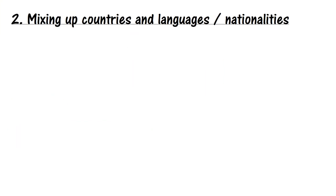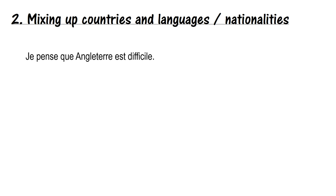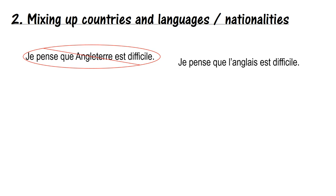Number two: another common error — mixing up countries and languages or nationalities. A lot of people do this in their English work as well. Here's a phrase I saw: 'Je pense que Angleterre est difficile' — literally 'I think that England is difficult.' But what this person probably wanted to say was 'I think that English is difficult.' Angleterre is England; Anglais is English. So we would say 'je pense que l'anglais est difficile' — and notice we've included the definite article, which was forgotten in the first example.